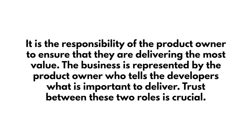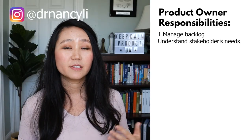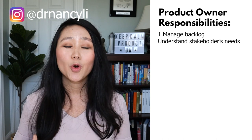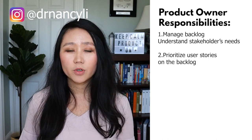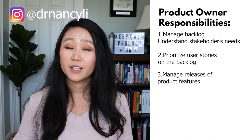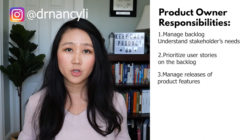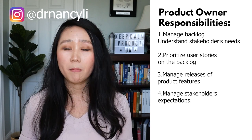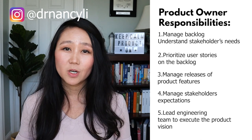It is the responsibility of the product owner to ensure they are delivering the most value. The business is represented by the product owner, who tells developers what is important to deliver. There are five responsibilities for product owners: number one, manage the product backlog and stakeholder needs; number two, prioritize user stories in scrum; number three, manage the release of product features end-to-end to ensure delivery on time and on quality; number four, manage stakeholder expectations; number five, lead the engineering team to execute on the correct vision.